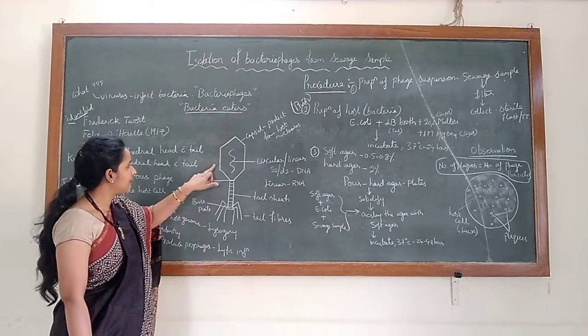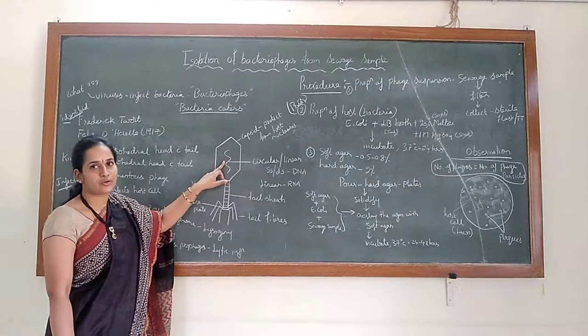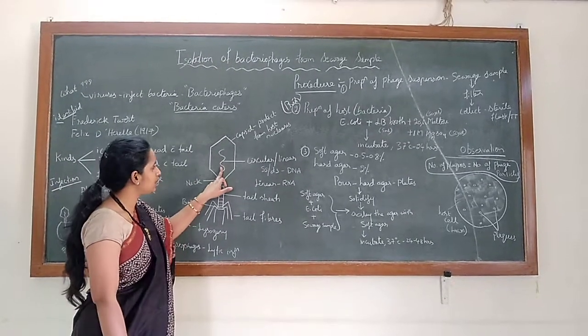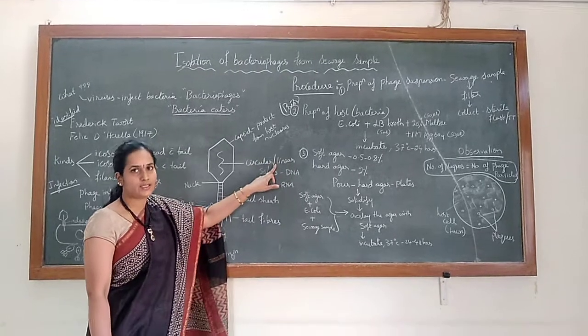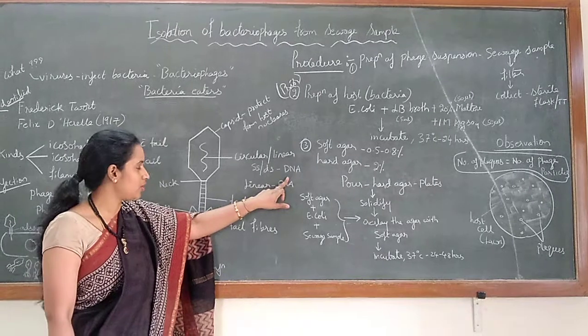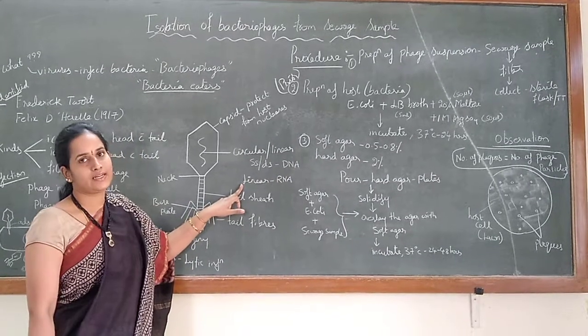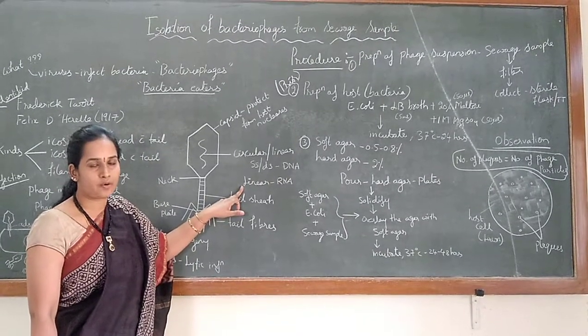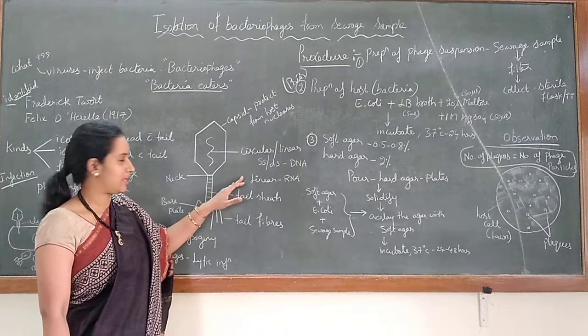So when you look at the head, the head region consists of the nucleic acid. This nucleic acid can be circular or linear, single-stranded or double-stranded DNA molecule, or it can be linear RNA molecule. Depending upon the phage, the nucleic acid will be varied.